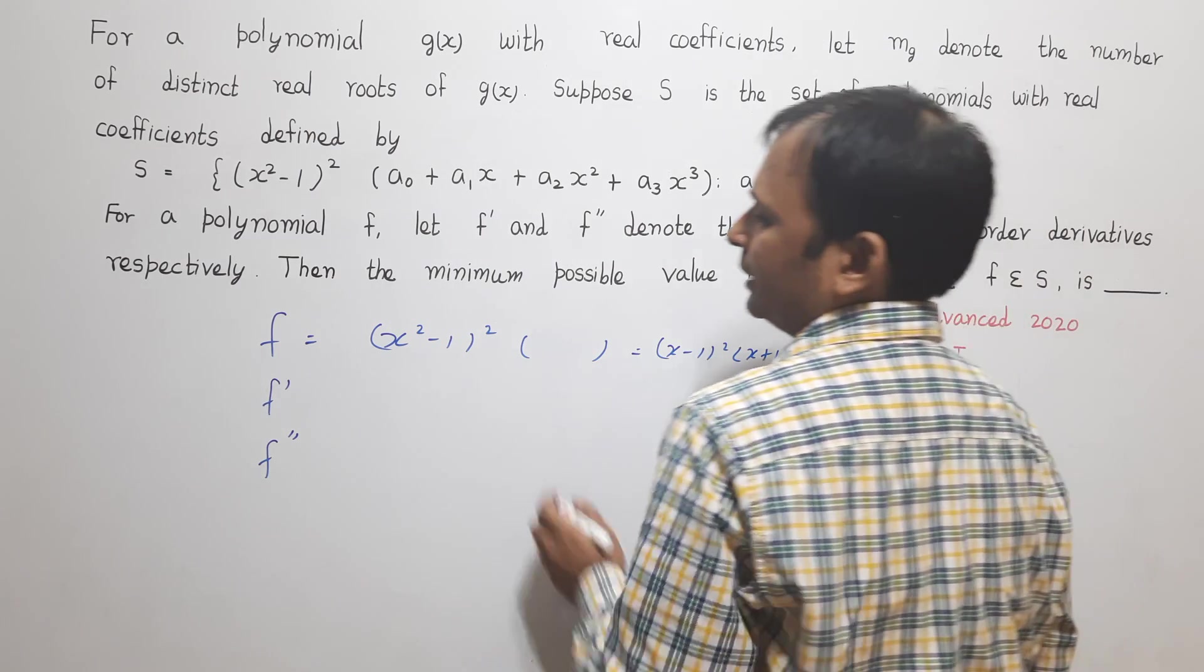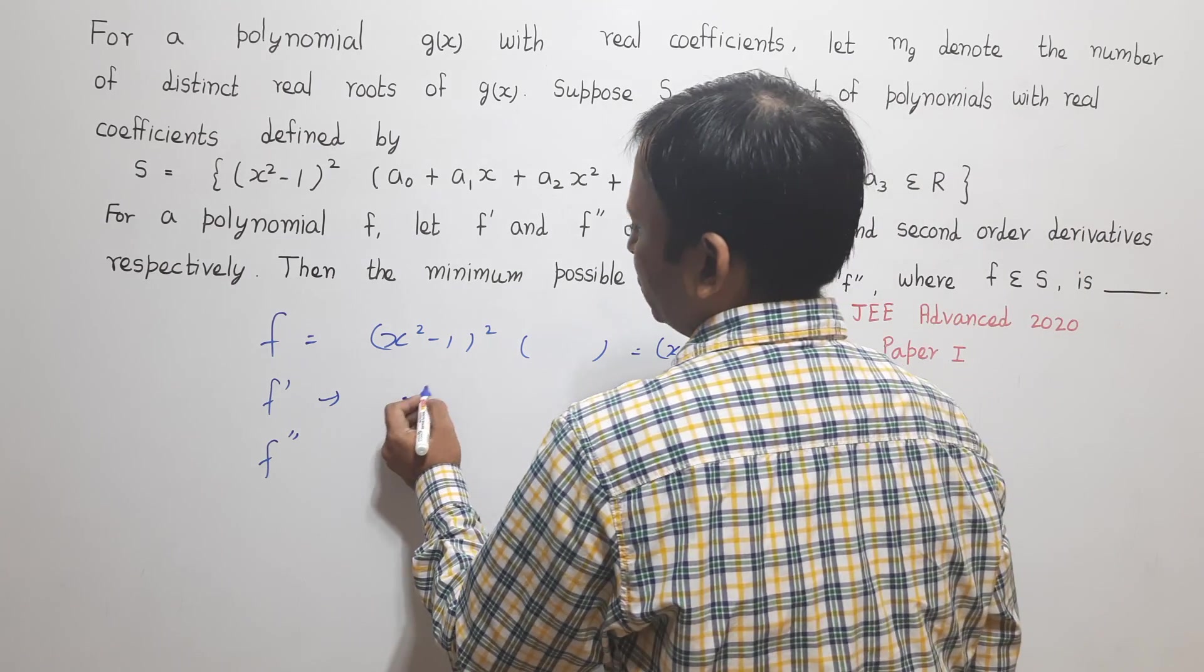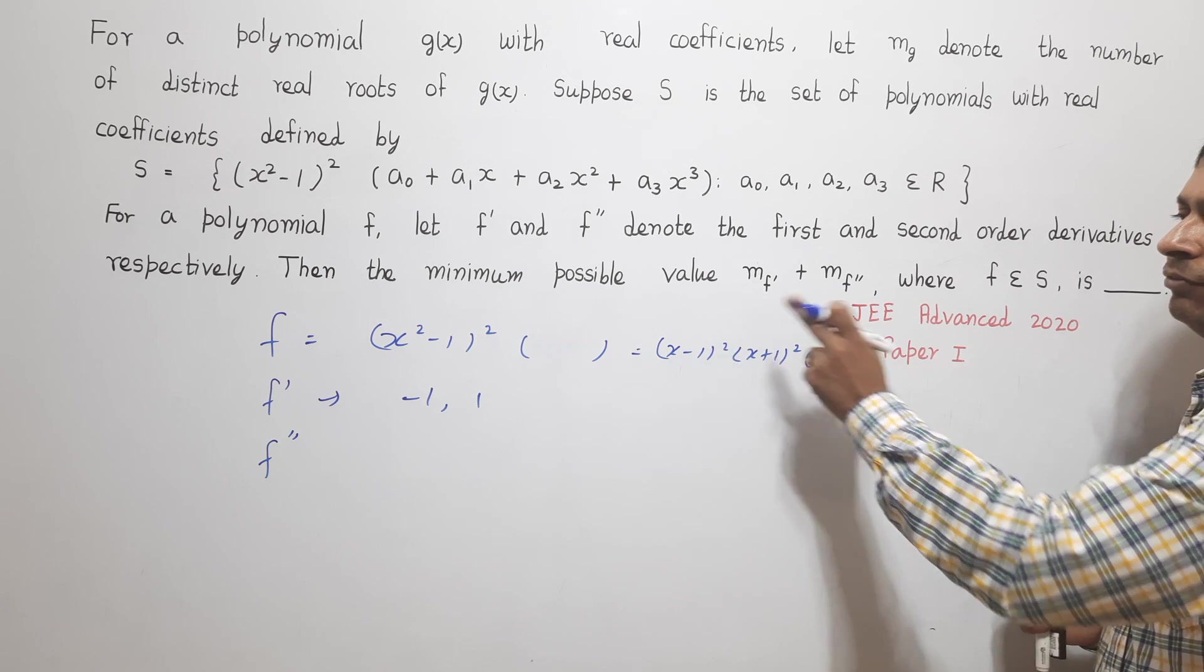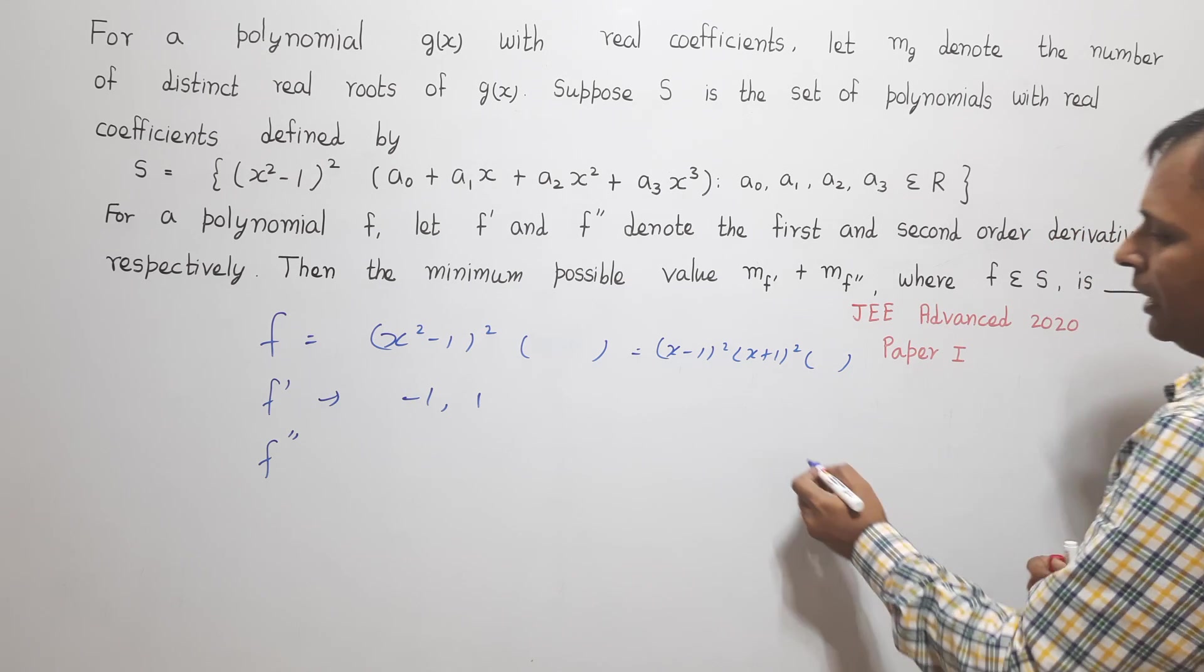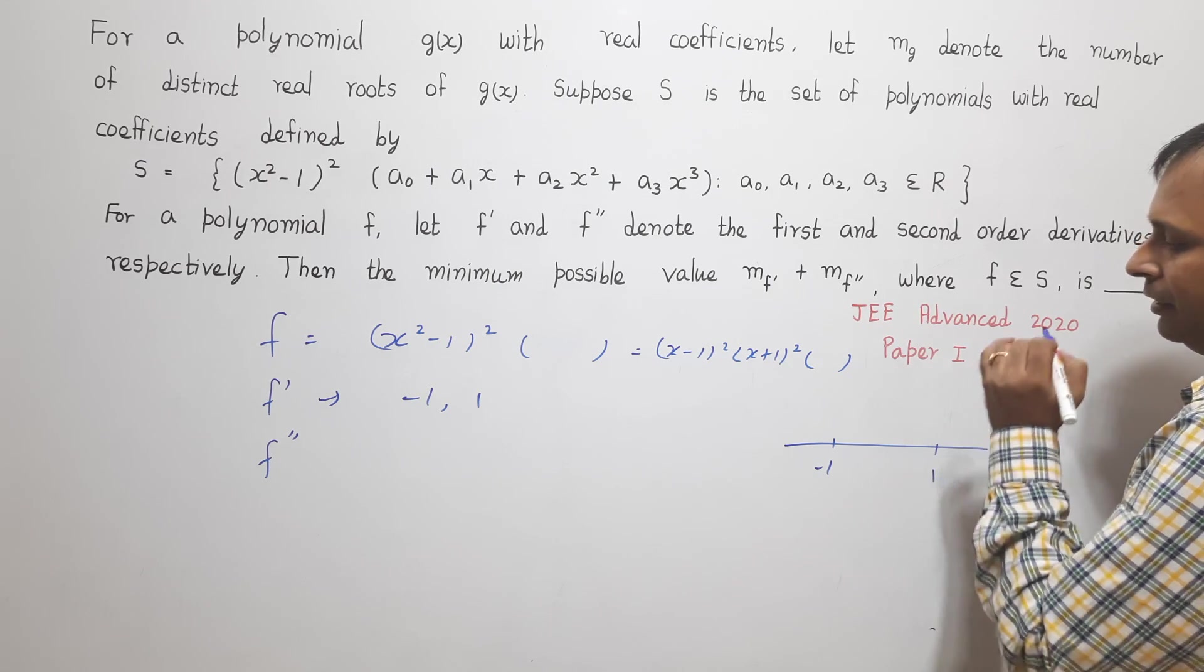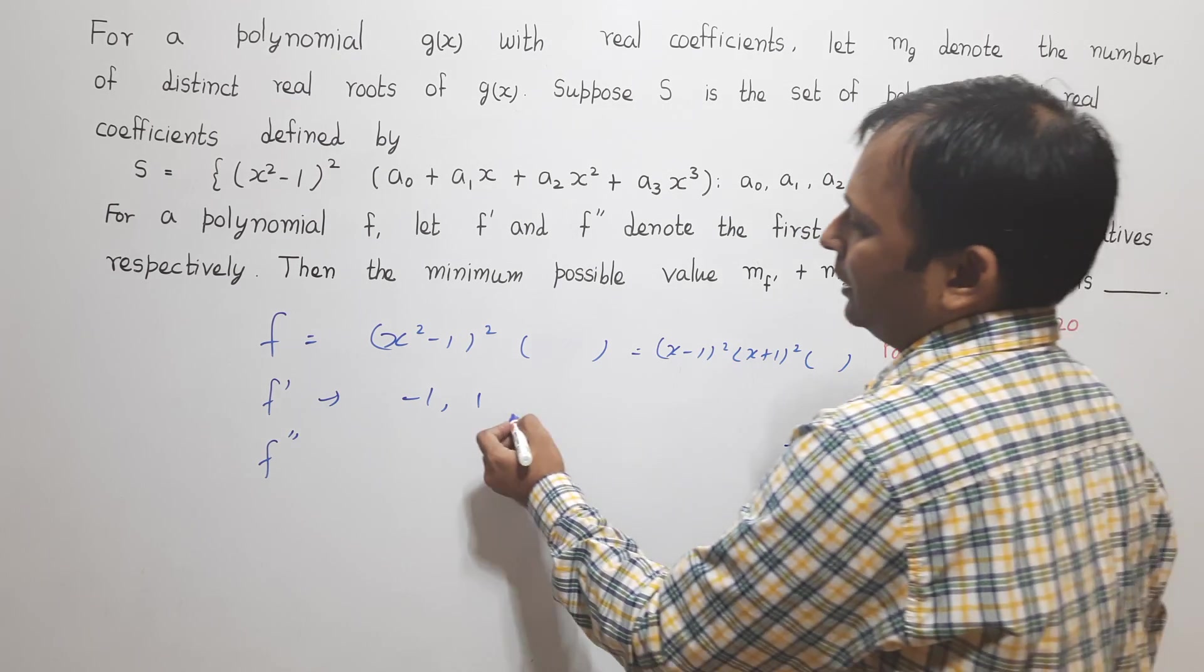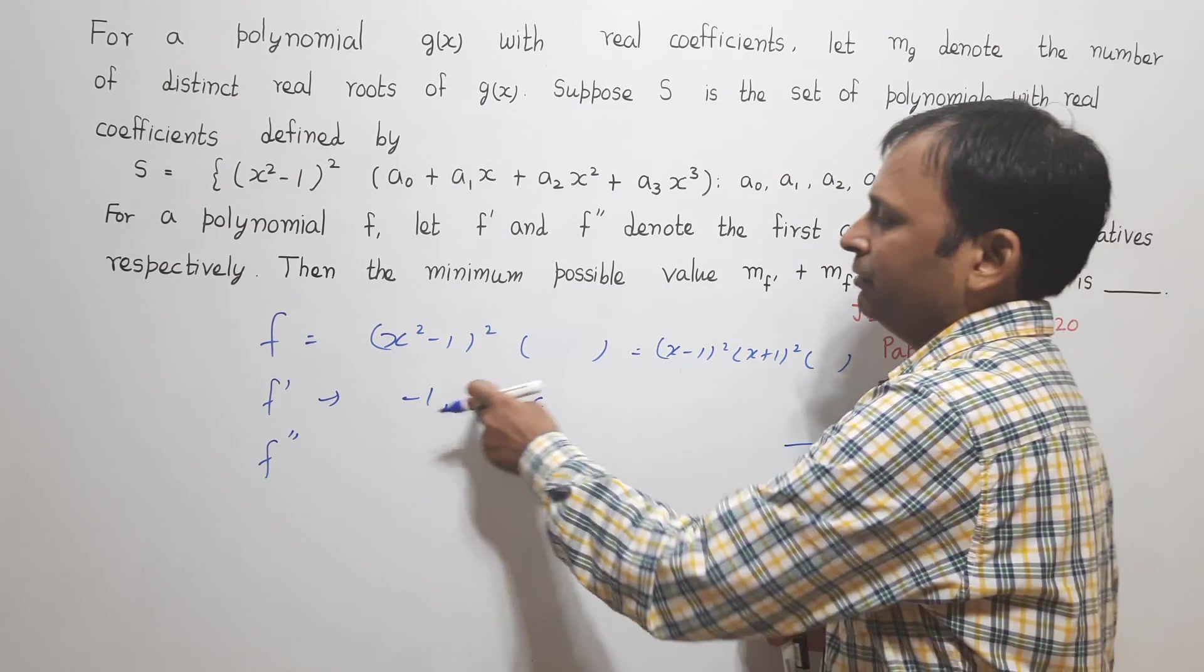That means one thing I can say very clearly that this f' will have two roots, -1 and 1, that will definitely be there in f'. Because f contains 1 and -1 as multiple roots. Secondly, if f has the root at x = -1 and x = 1, then according to Rolle's theorem there has to be one root between -1 and 1 for f'. So f' will have another root, let us say C is some one more root which has the value between -1 and 1.